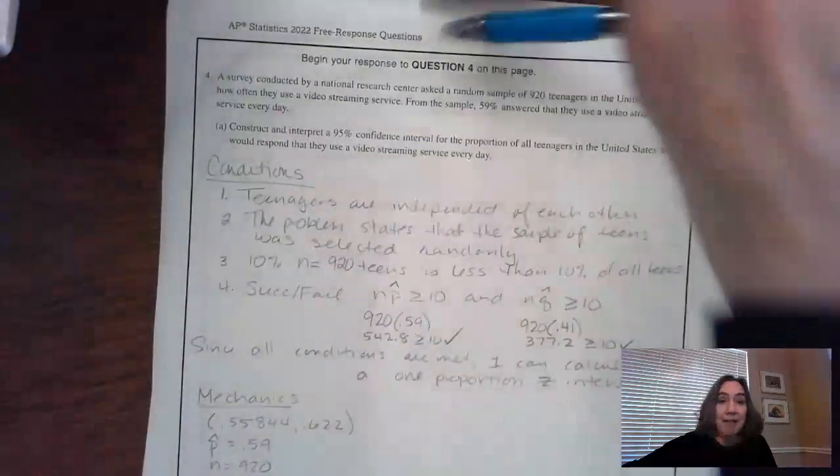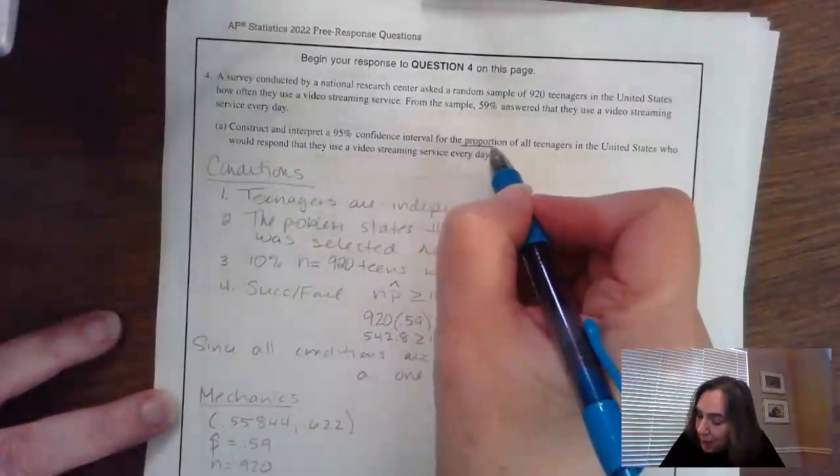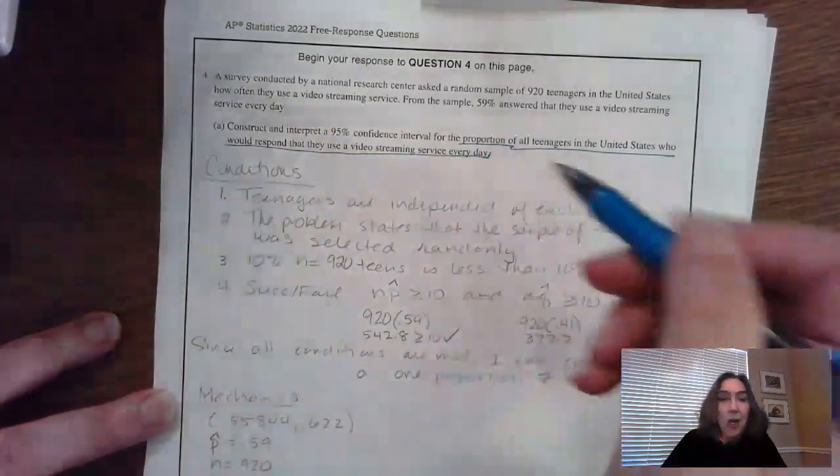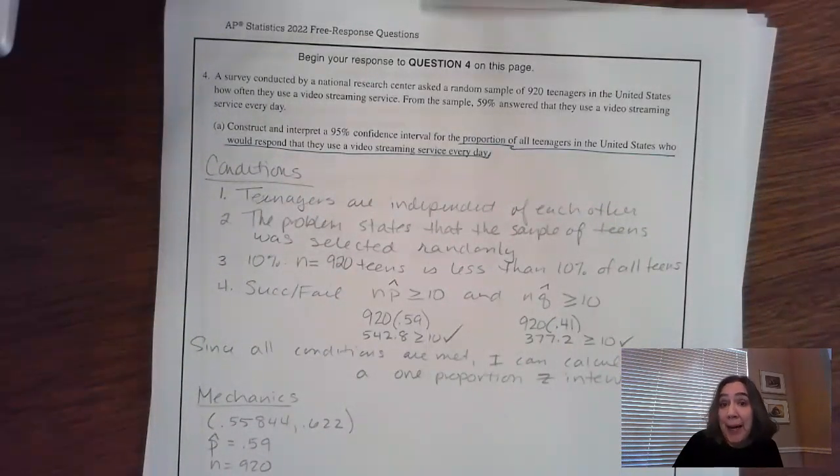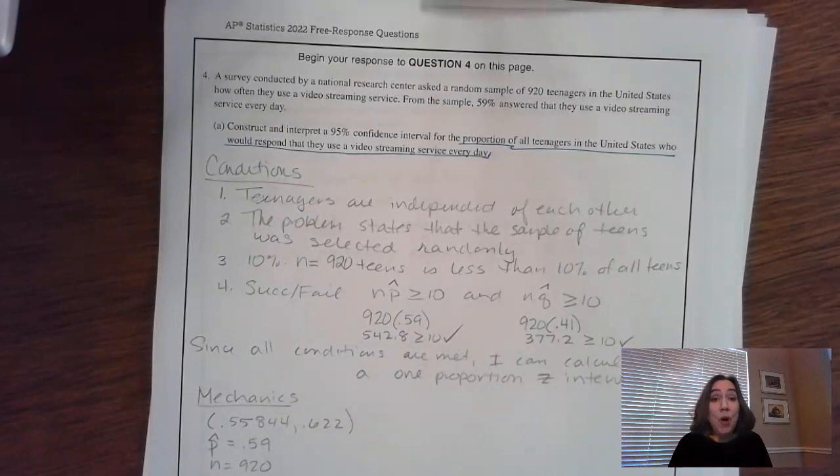Part A says construct and interpret a 95% confidence interval for the proportion of, and then all that stuff right there is the stuff that you're going to put in your answer so that you have the proper context. So we're looking to find an interval to answer the question, where's the P? Where is the true population proportion of teens who use streaming every day? So we know we're going to be doing a one proportion Z interval. The AP divided this into four sections and each section got an E, a P or an I, and I'm going to divide it up into those four sections too.